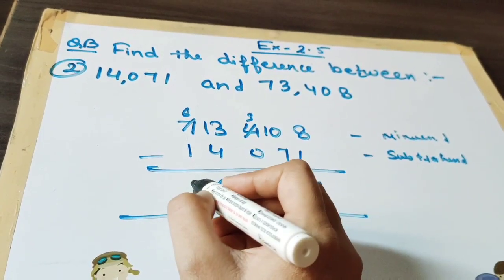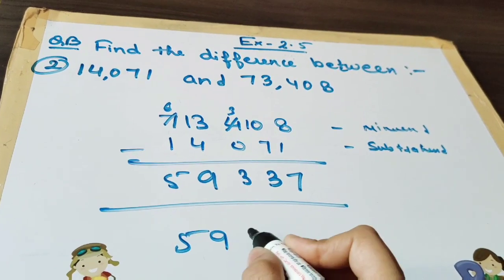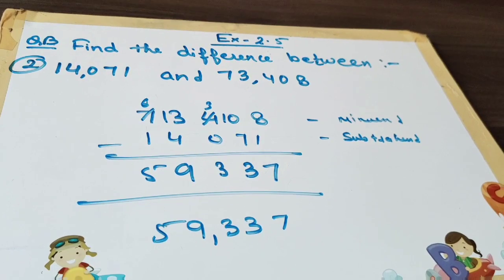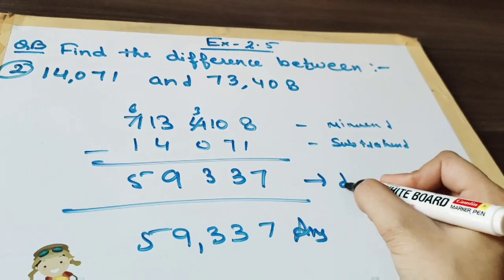6 minus 1 is 5. So we got the answer 59337. That is 59,337. And this is what? Difference.